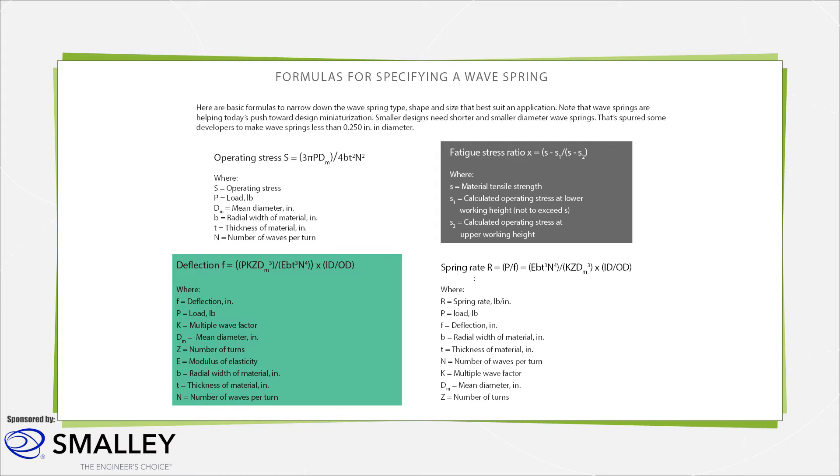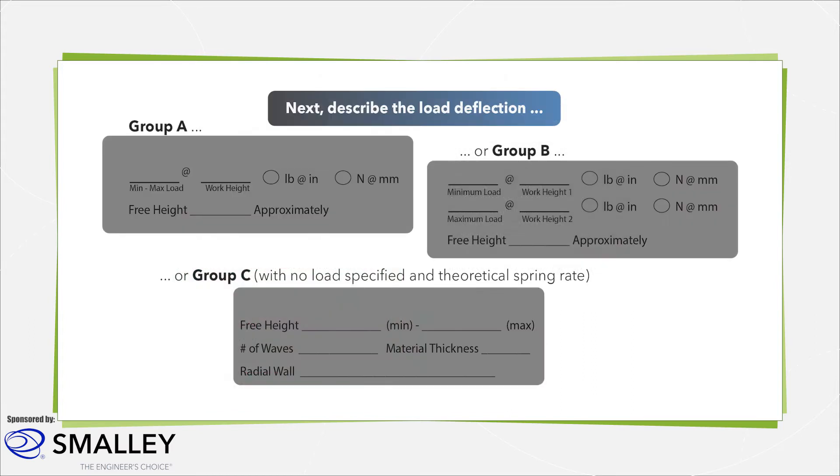A valve is an example of a cycling application. The spring oscillates between two work heights to regulate the valve.